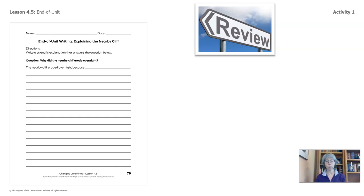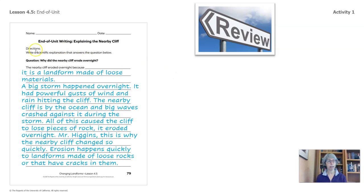Let's review what has been written. Someone has submitted this writing sample — let's take a look. The question we were answering is: why did the nearby cliff erode overnight? The nearby cliff eroded overnight because it is a landform made of loose materials. A big storm happened overnight. It had powerful gusts of wind and rain hitting the cliff. The nearby cliff is by the ocean and big waves crashed against it during the storm. All of this caused the cliff to lose pieces of rock. It eroded overnight. Mr. Higgins, this is why the nearby cliff changed so quickly. Erosion happens quickly to landforms made of loose rocks or that have cracks in them.